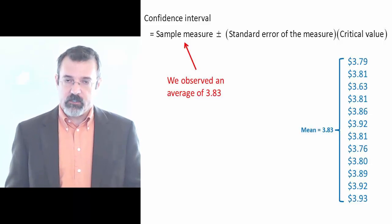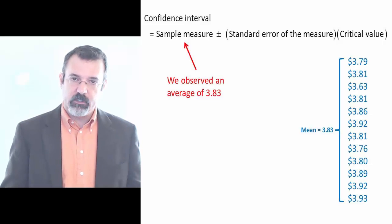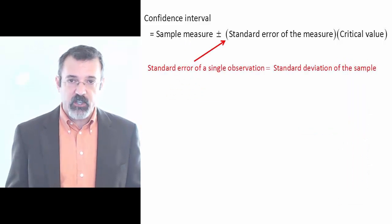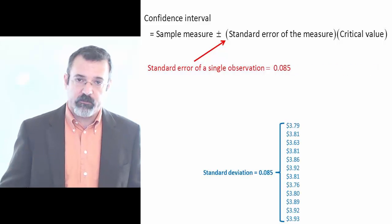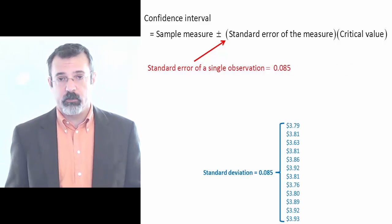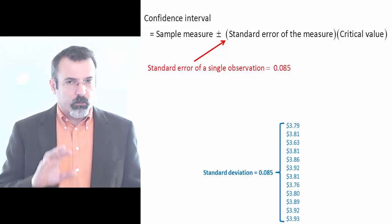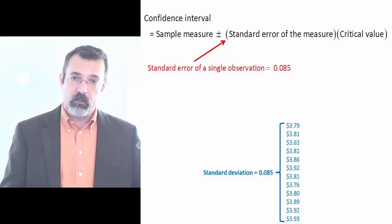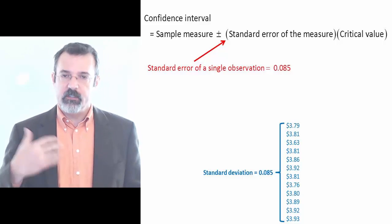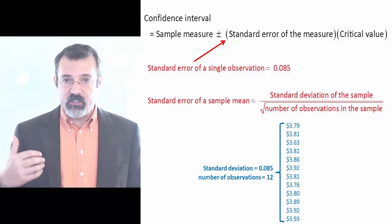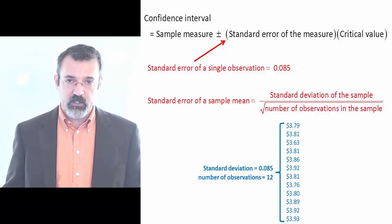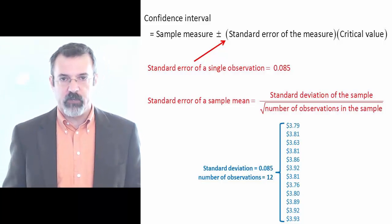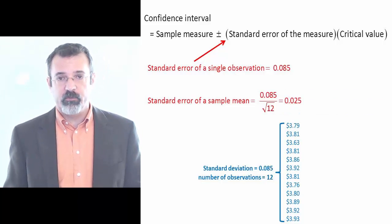If we're building a confidence interval for the price of gas at a single gas station, then the standard error of the measure is simply the standard deviation of the observations we have — in this case, 0.085. If, however, we're building a confidence interval for the average price of gas over 12 stations, then the standard error of the measure is the standard deviation of our observations, 0.085, divided by the square root of the number of observations. This gives us 0.025.